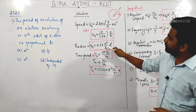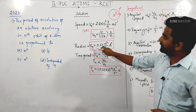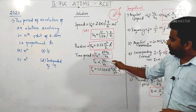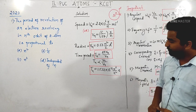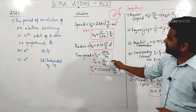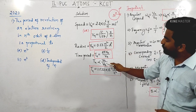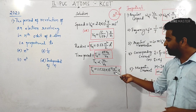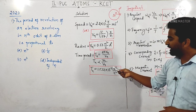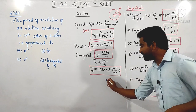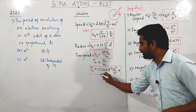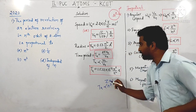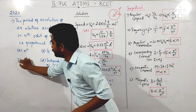Radius is proportional to n²/Z, and velocity is proportional to Z/n. Substituting, time period is proportional to n³/Z². For hydrogen atom, Z = 1, so the time period is proportional to n³. The answer for the given question is option C.